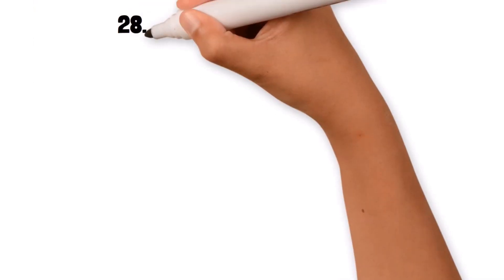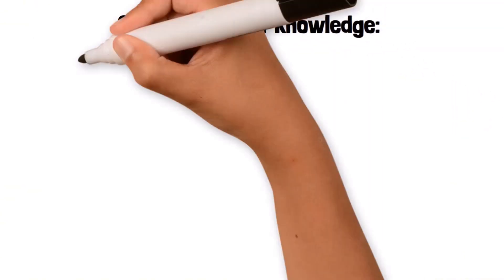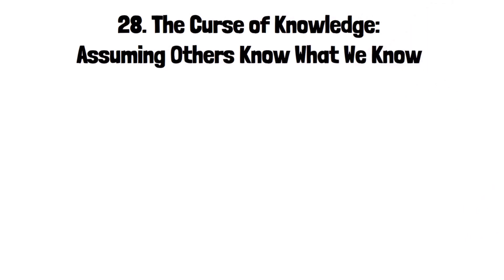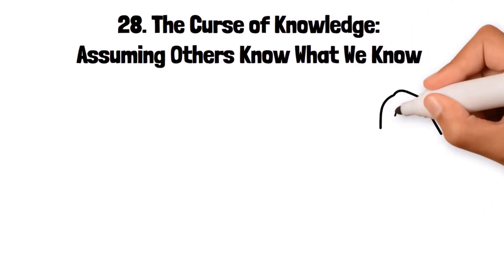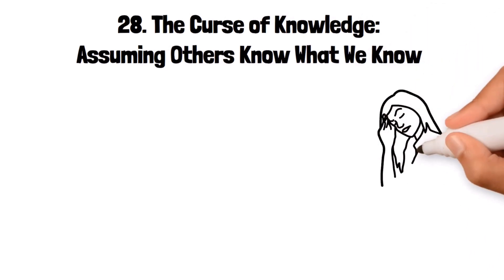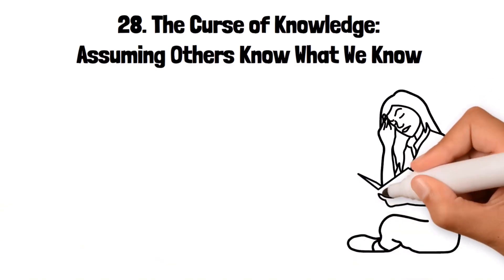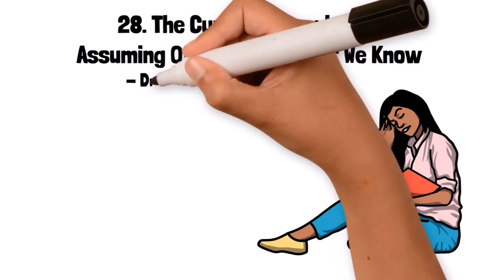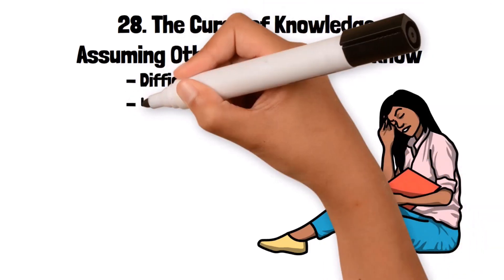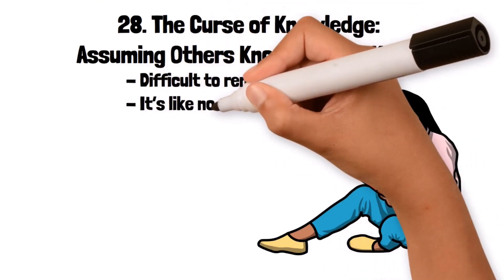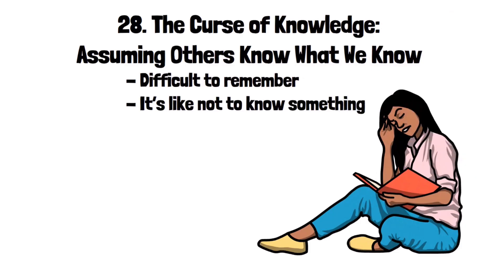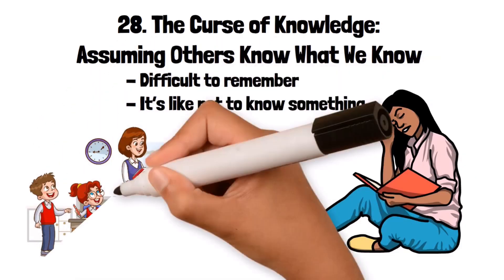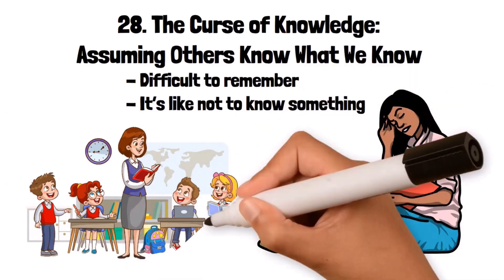28. The Curse of Knowledge: assuming others know what we know. The curse of knowledge is a cognitive bias where better-informed individuals find it difficult to think about problems from the perspective of less-informed people. This bias makes it hard to explain things to others because it's difficult to remember what it's like not to know something. For example, a teacher might struggle to explain a concept to students because they forget what it was like to not understand it themselves.